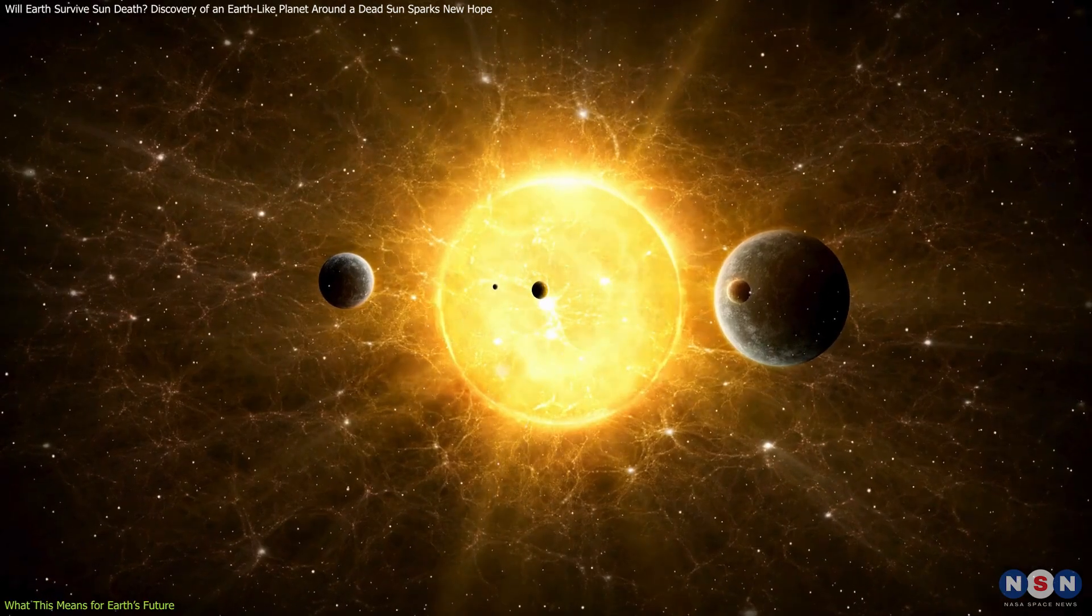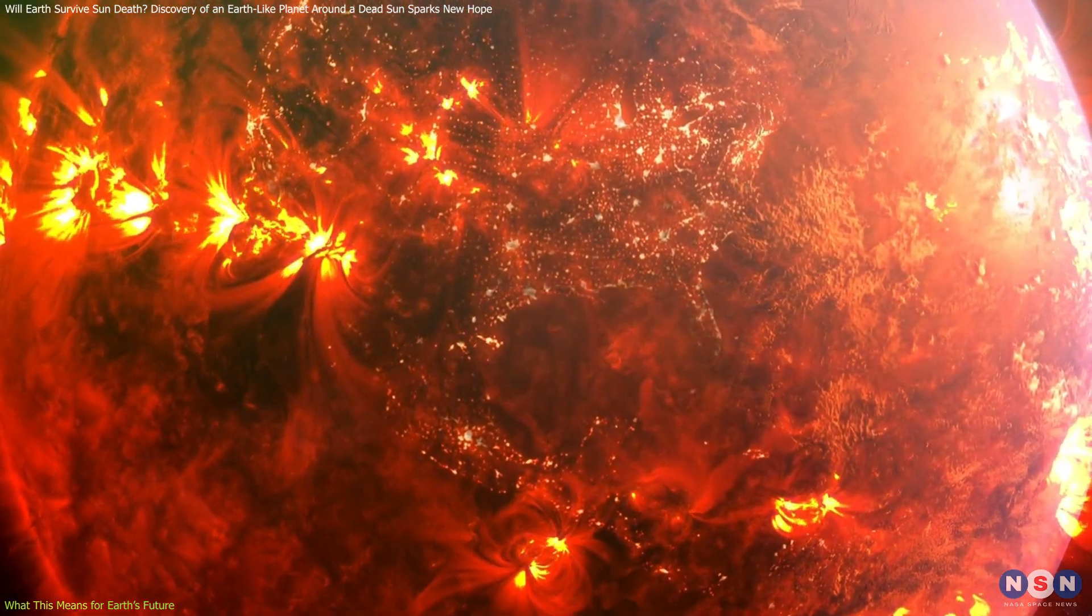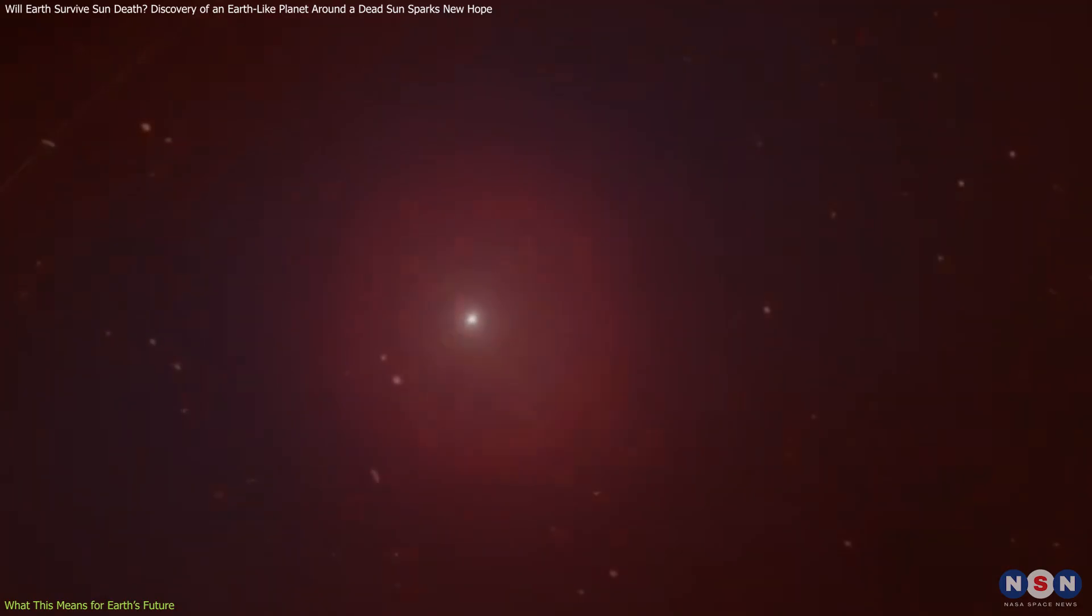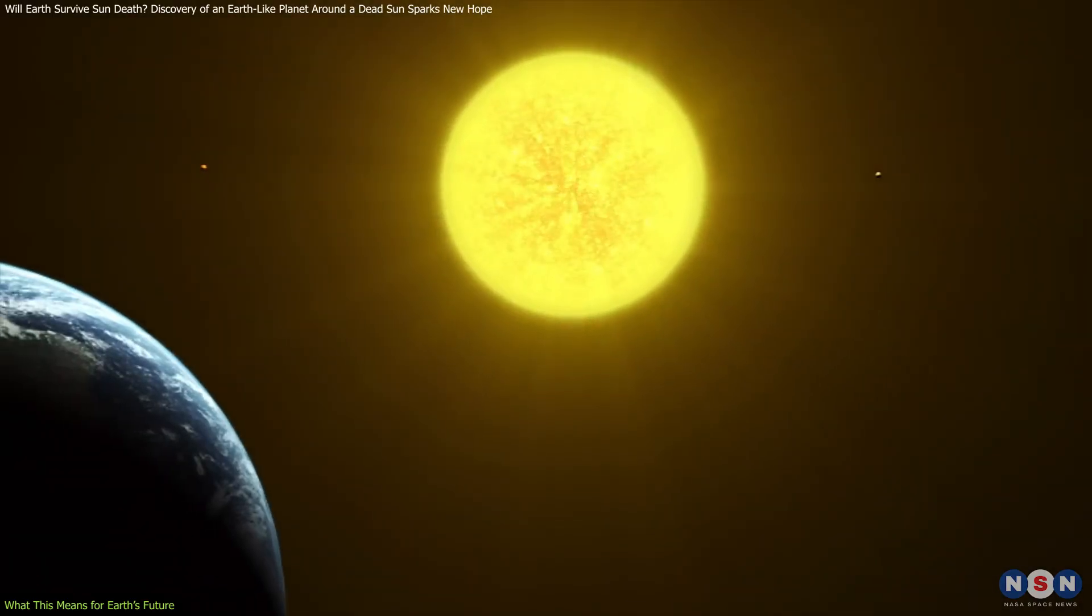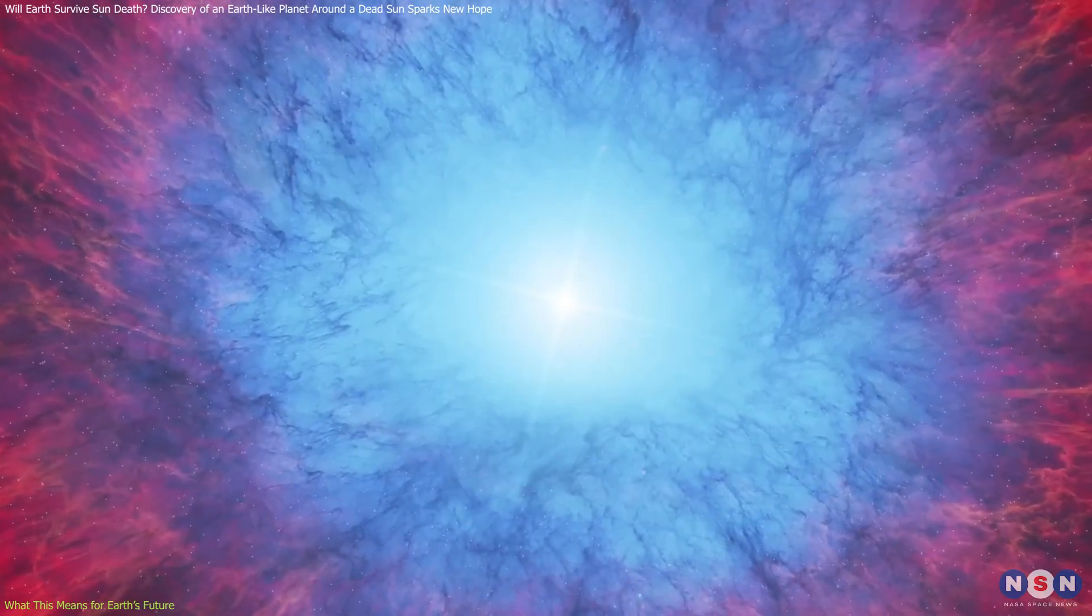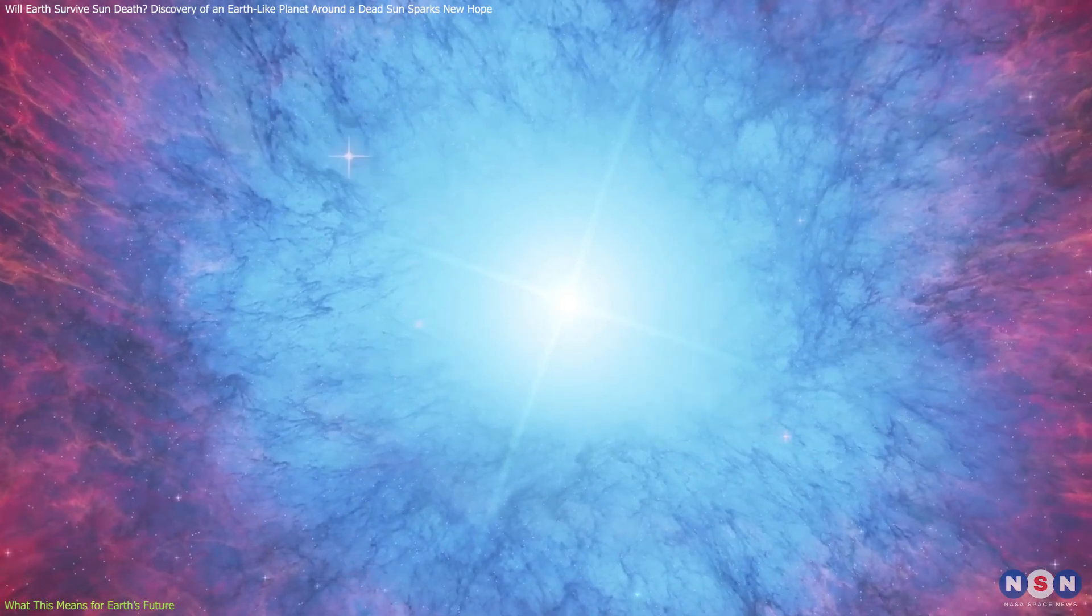During the Sun's expansion, Earth's surface could also endure extreme heating, potentially turning into a scorched, lava-covered landscape before the Sun shrinks into a white dwarf. As the Sun sheds its outer layers and transitions into this final stage, it will leave behind a white dwarf surrounded by a glowing planetary nebula.